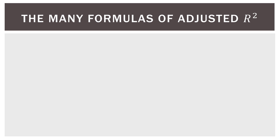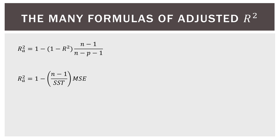Unfortunately, adjusted R-square has many formulas. If you look online or in textbooks, you might see one at the top, one in the middle, one on the bottom, or one that's different entirely. The important thing to point out is that they all achieve the same result. If you reorganize them algebraically, you can actually end up with the same formula.